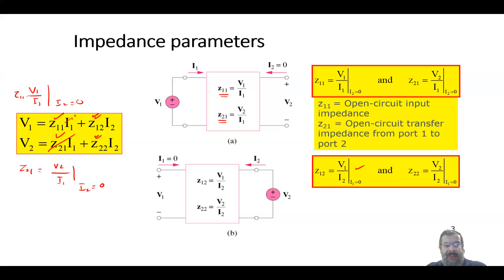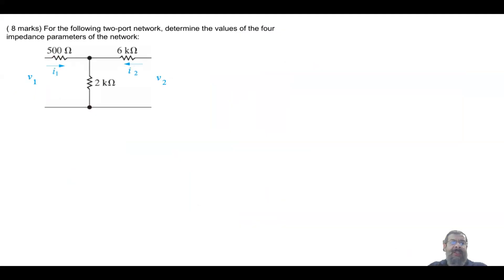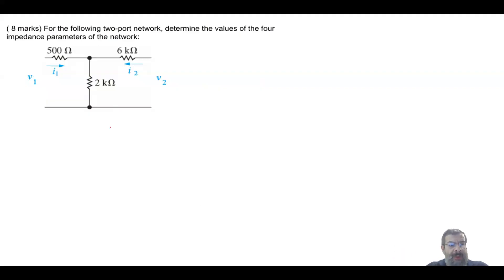And z22 = v2/i2 when i1 = 0. So it is very straightforward. Now let's go to the question: find the values of the four impedance parameters — z11, z12, z21, and z22.